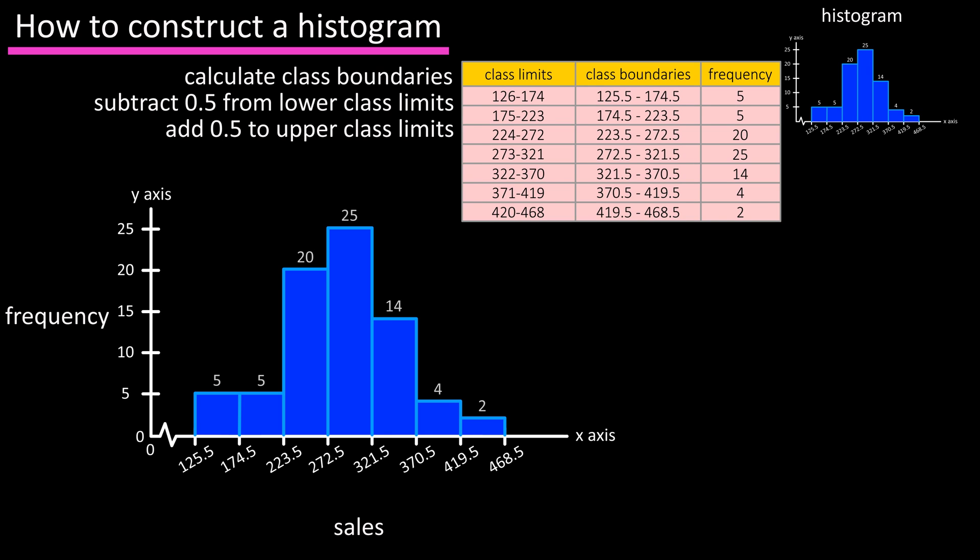Once you're finished, you can put the frequency values above the bars, as this gives the viewer a quicker way to view the histogram, rather than having to find the given bar's value from the y-axis.